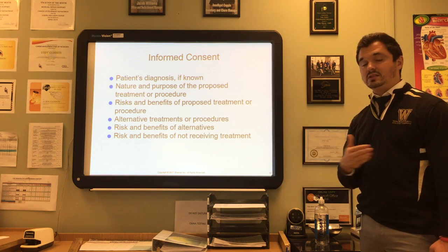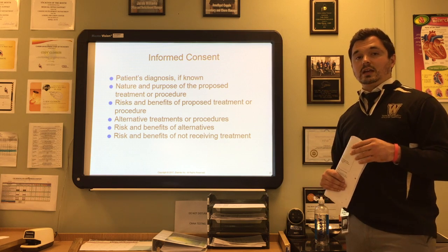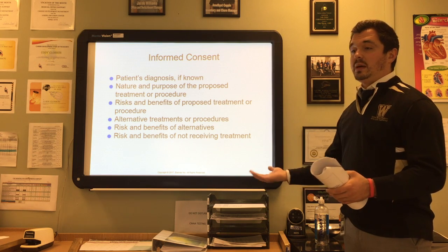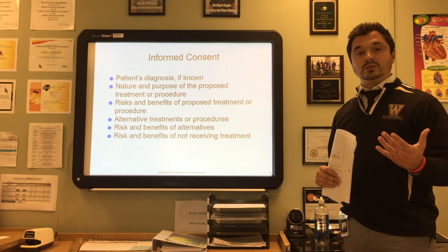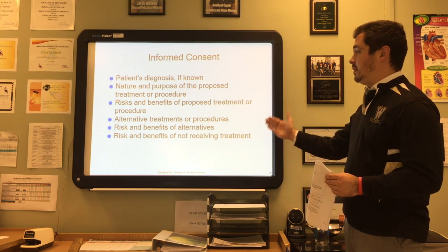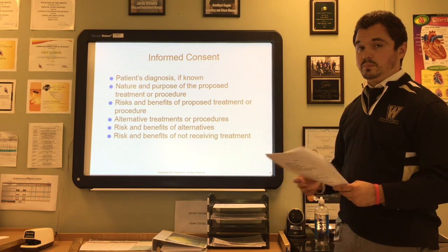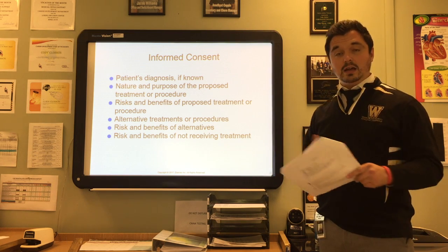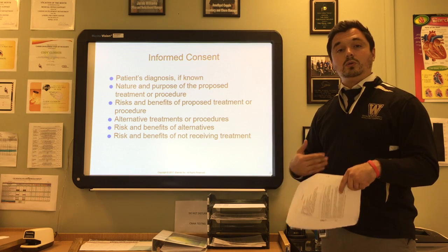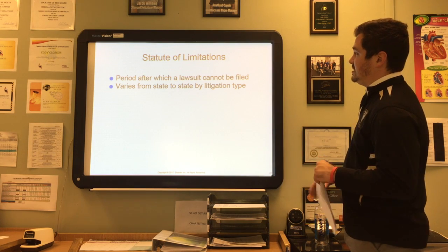For informed consent to be legal, the following must occur: the patient's diagnosis, if known, must be presented; the nature and purpose of the proposed treatment or procedure must be explained; the risks and benefits of the proposed treatment must be discussed; alternative treatments or procedures along with their risks and benefits must be offered; and the risks and benefits of having no procedure at all must be stated. The patient then makes the decision based on the medical advice. For a minor requiring surgery, the guardian ad litem — the minor's legal guardian — provides consent.